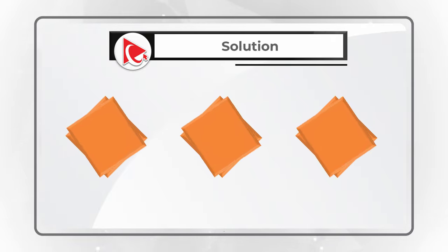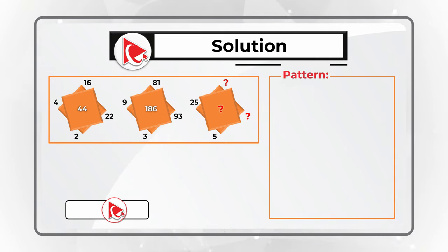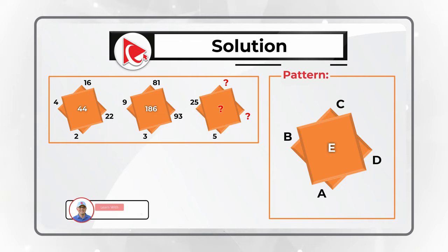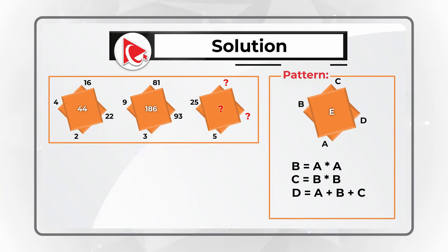Always look for patterns. If we label the corners and middle of the diamonds A through E, the pattern is: B equals A times A (A squared); C equals B times B; D equals A plus B plus C; and E equals C multiplied by 2.